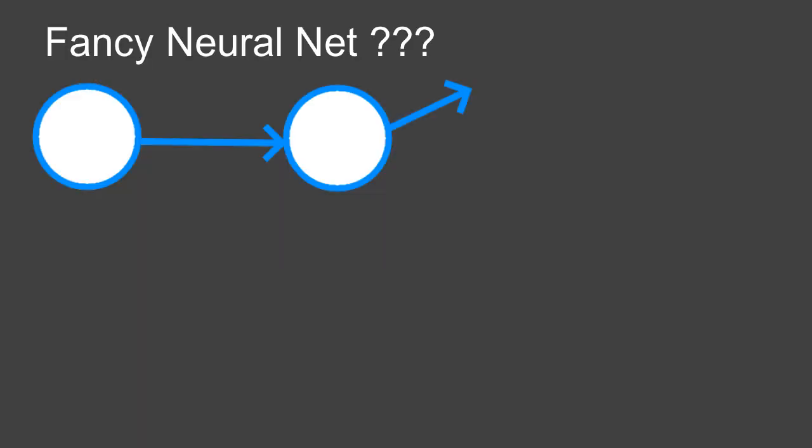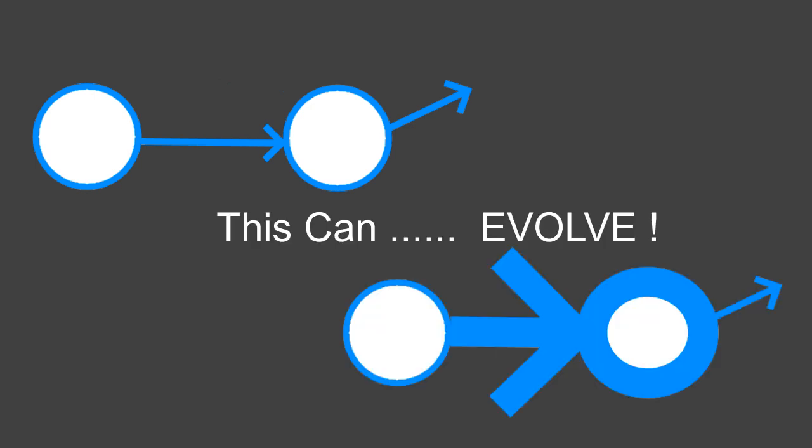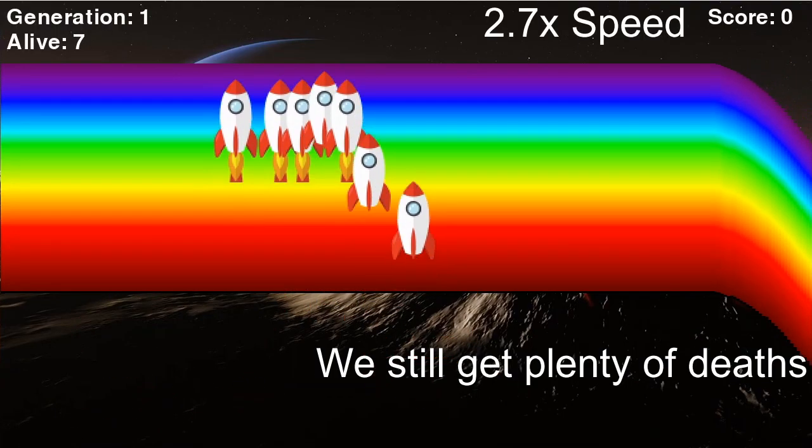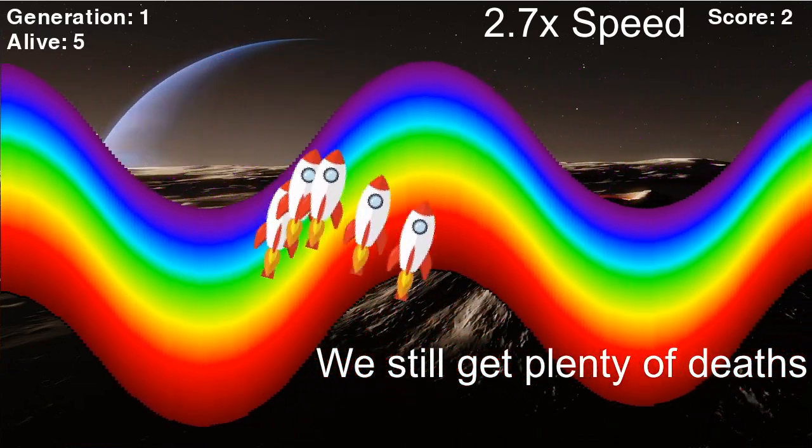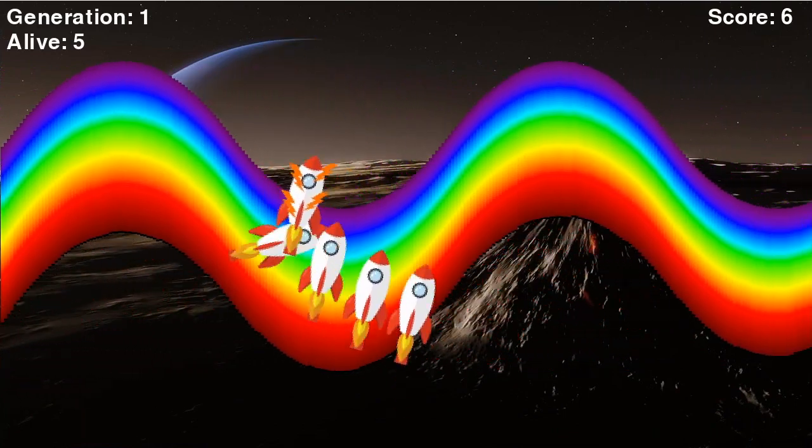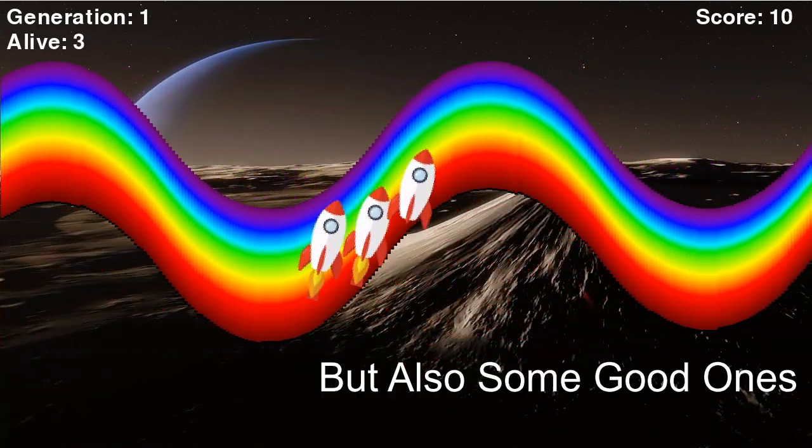At this point you're probably thinking, wait, your fancy one node neural network seems pretty much exactly like a simple if statement, and indeed it is, for this example. But now we can let that if statement mutate. NEAT takes the best genomes and makes new ones. Truthfully, there are a lot of configuration settings, and I'm not sure exactly how they all work. But this is what happens in the second generation. We still get a lot of early deaths, but we also get some rockets to do well. Some of them have slightly different genomes. In this specific case, however, because we had elitism turned on, the best rocket was carried over from the previous generation and it is still the best.